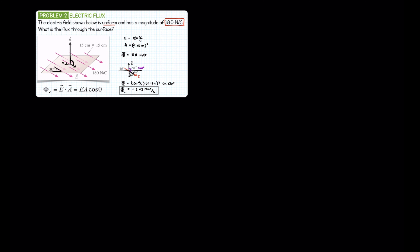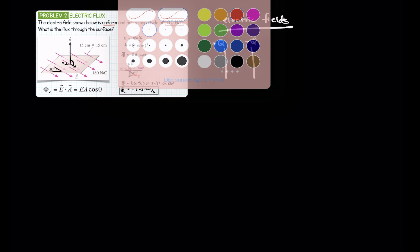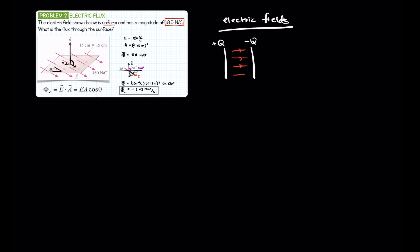There are different kinds of electric fields we calculated in the previous chapter. We have uniform — so this would be plus Q, minus Q — the uniform field of a parallel plate capacitor, where the electric field equals eta over epsilon naught. We also have the point charge, which is not uniform. One way you can tell it's not uniform is that the electric field lines don't have even spacing. The electric field of a point charge is a Coulomb's law situation — an inverse square relationship, very much not constant.